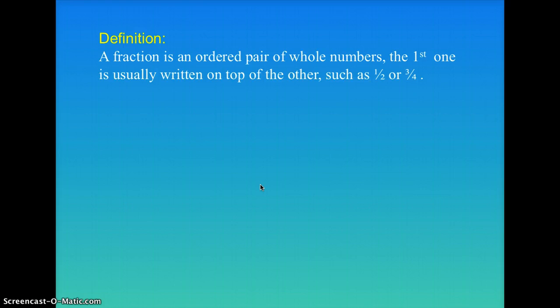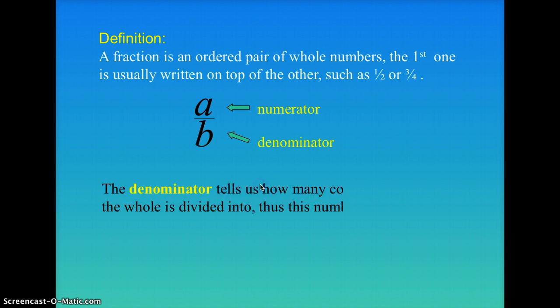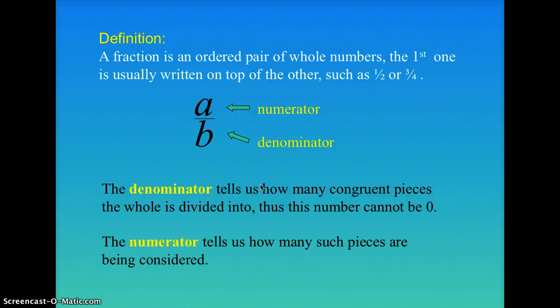A fraction is an ordered pair of whole numbers. The first one is usually written on top of the other, such as one-half or three-fourths. So A over B — A being your numerator, B being your denominator on the bottom. The denominator tells us how many congruent pieces the whole is divided into. This number cannot be zero, because you obviously have to have at least one piece — the bottom just tells you how many pieces everything is cut into. The numerator tells us how many such pieces are being considered — how many you have, or how much was left over. It's the number you're talking about.